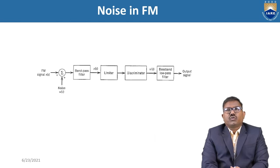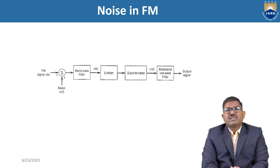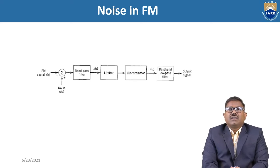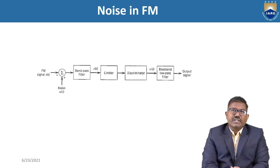First we apply S(t), which is the FM modulated signal, and noise N(t) is added to that signal. The combination of signal plus noise is applied to a bandpass filter, followed by a limiter, then a discriminator, and finally a low pass filter. The limiter removes any amplitude variations, and the discriminator acts as the detector or demodulator.